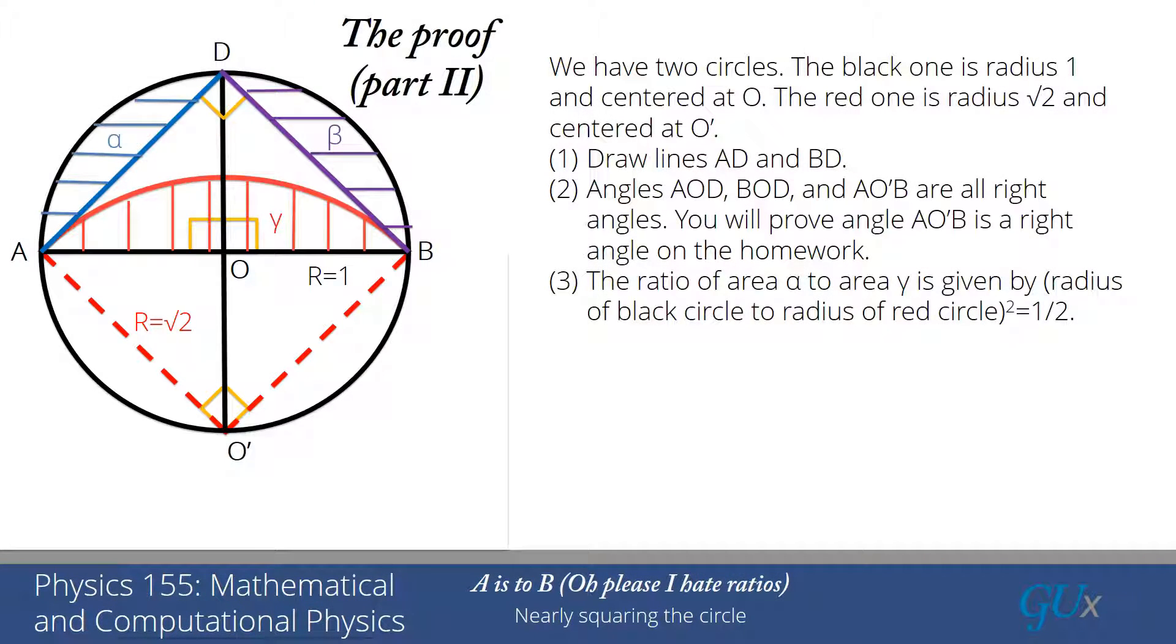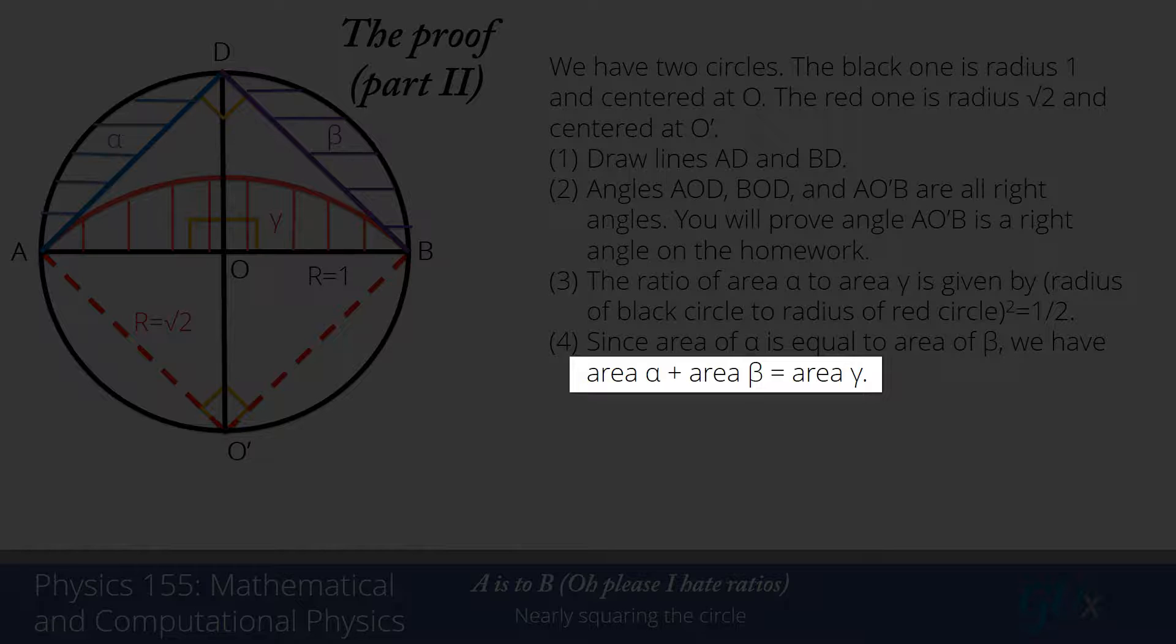Similarly, the area of alpha is equal to the area of beta. So because alpha is equal to beta and gamma is equal to twice alpha, we have the interesting identity that the area of alpha plus the area of beta is equal to the area of gamma.